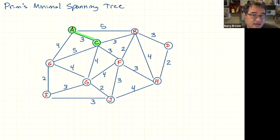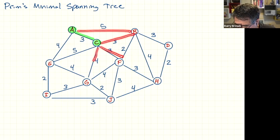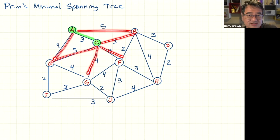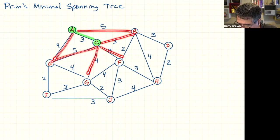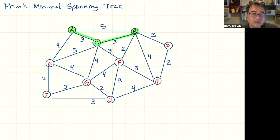Then we repeat the process. This time we look at all of the edges coming out of all the vertices included so far — A and C — and we don't include any edges that go back to vertices we've already included. So we consider the edges with weights 5, 3, 3, 4, 5, and 4. We pick the lowest weight. If there's a tie, we break it randomly or by picking the first vertex in alphabetical order. We do have a tie between two edges with weight 3, so we pick alphabetically — B comes before F — and we add B.